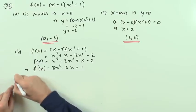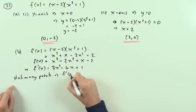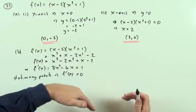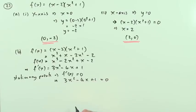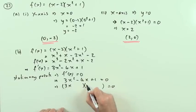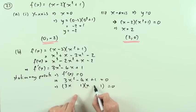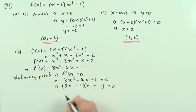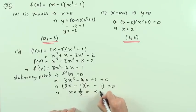To find stationary points, I set the derivative equal to zero — I need to solve 3x squared minus 4x plus 1 equals zero. There's only one way to make 3x squared: that's 3x times x. And only one way to make 1. Since the middle term is negative, the bigger factor is negative. This factorises to (3x minus 1)(x minus 1) equals zero, giving x equals one third or x equals one.